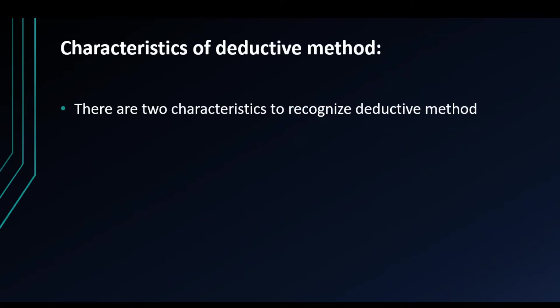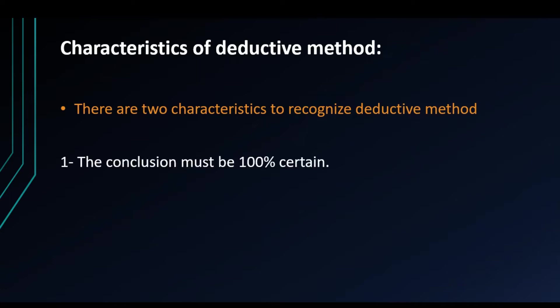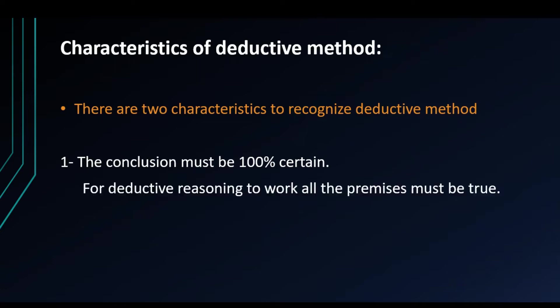There are two things which can help you recognize deductive reasoning. An important characteristic of deductive reasoning is that the conclusion must be 100% certain. If we find that the conclusion is incorrect, then we need to revisit the premises and figure out which one is false. If Nemo doesn't need water to survive, maybe Nemo is not a fish. For deductive reasoning to work, all the premises must be true.